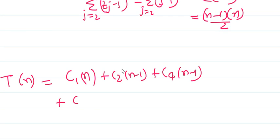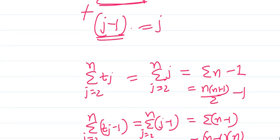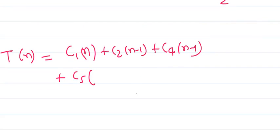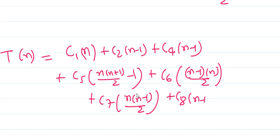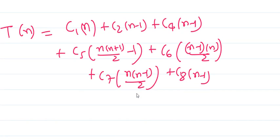But the next term - instead of TJ going from 2 to n, you can write it's n into n plus 1 divided by 2 minus 1. The next term: C6 into n minus 1 into n divided by 2. Next term: C7 into n into n minus 1 divided by 2. And the last term will remain as it is.